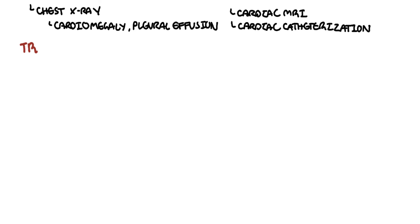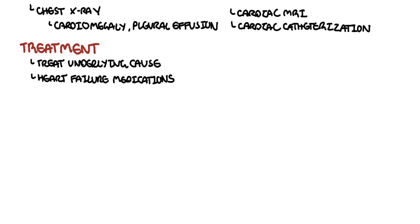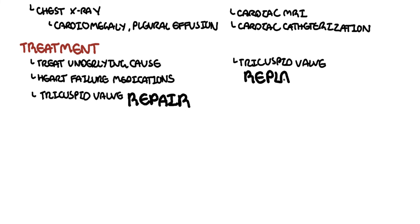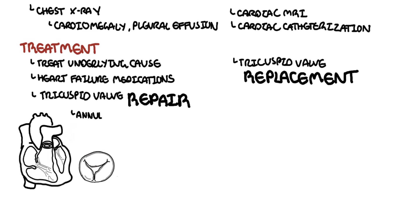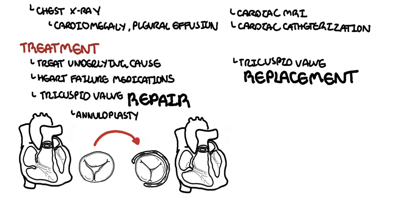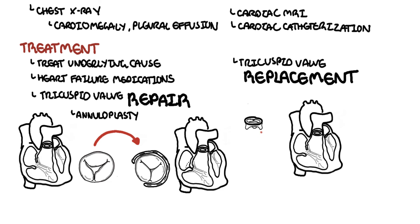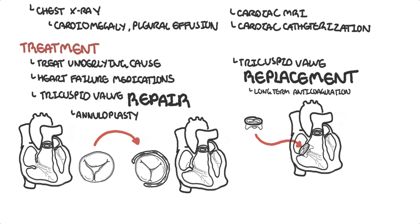Treatment of tricuspid regurgitation involves treating the underlying cause and managing heart failure, which includes loop diuretics and aldosterone antagonists. Surgical options include valve repair or tricuspid valve replacement. Valve repair involves annuloplasty, where the tricuspid valve annulus is sutured to a prosthetic ring or a tailored reduction in annulus circumferential size is performed. Valve replacement involves replacing the whole valve with a synthetic prosthesis, requiring anticoagulation. Surgical options are indicated when tricuspid regurgitation is very severe and symptomatic.